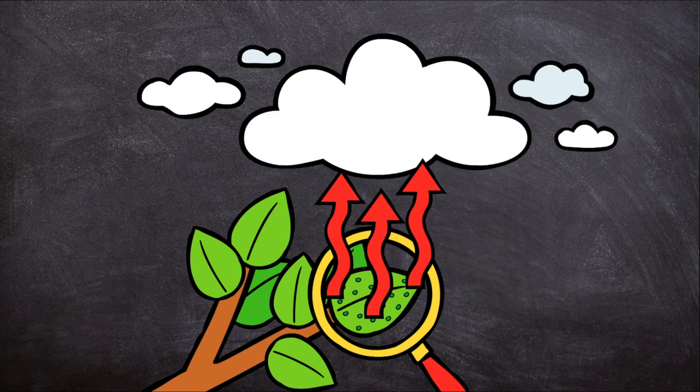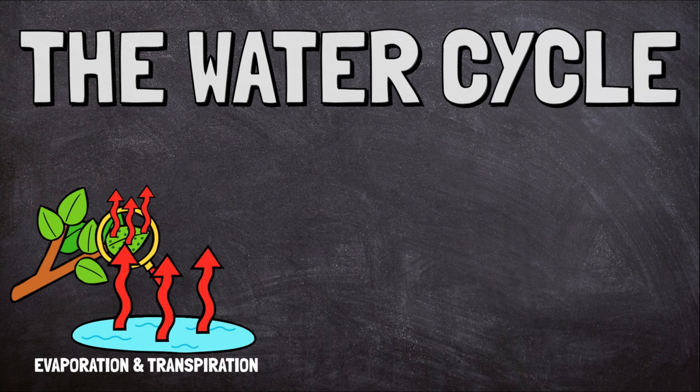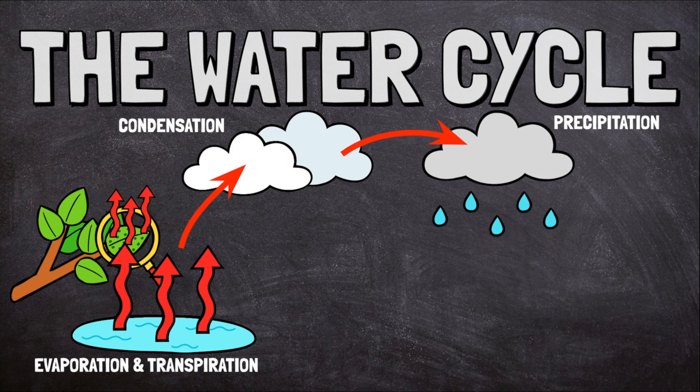The water vapor rises into the air to later form clouds. Evaporation and transpiration are both ways that water makes its way from Earth's surface into the atmosphere. This water vapor will form clouds. Eventually the water will fall back to Earth.